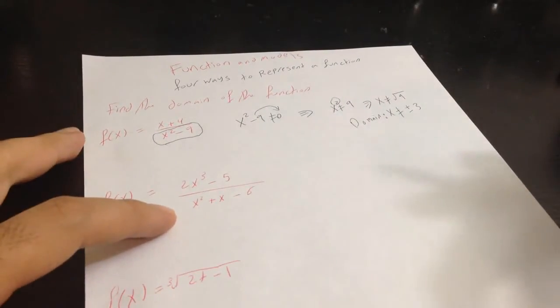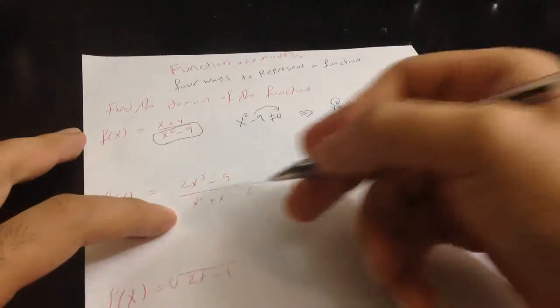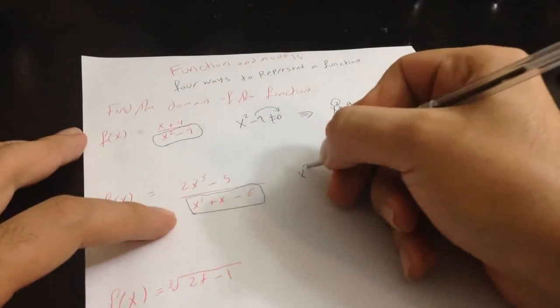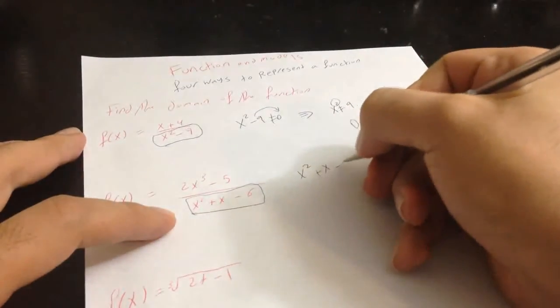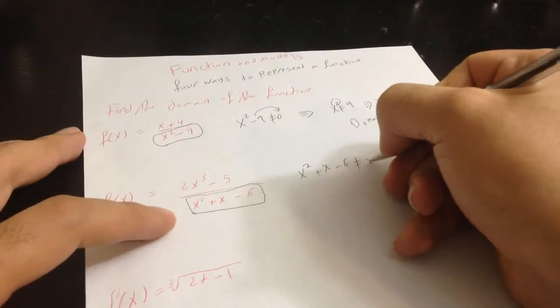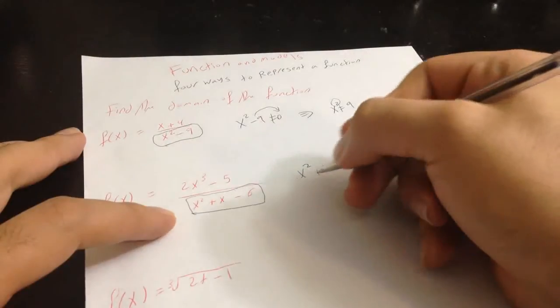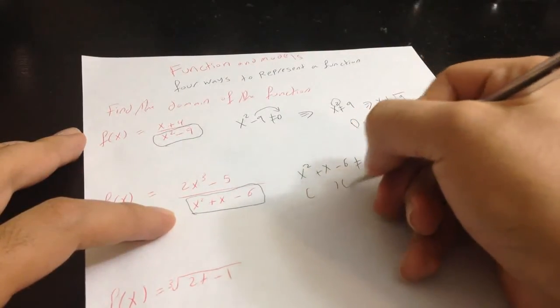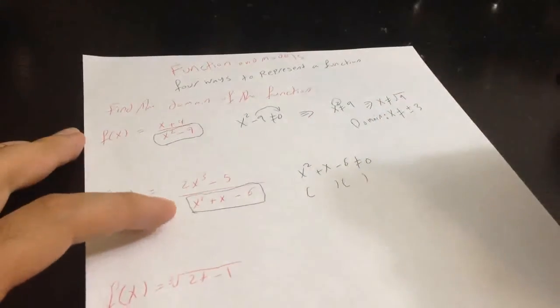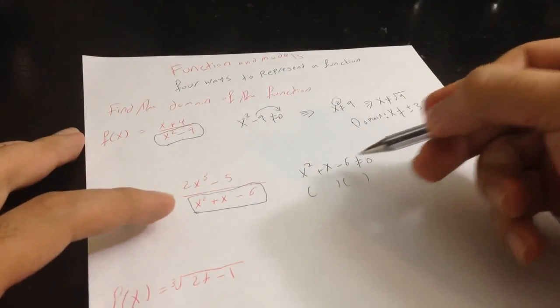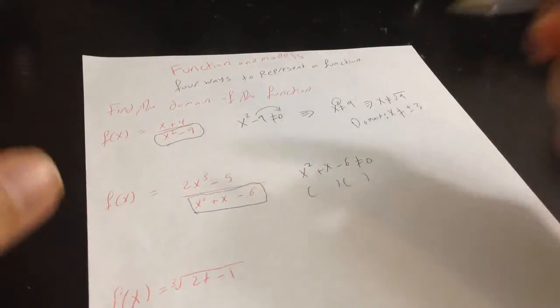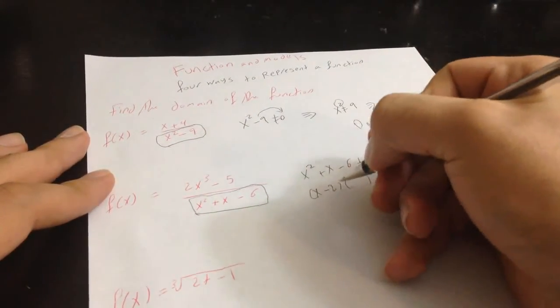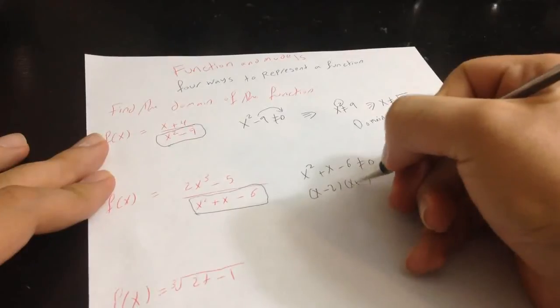to find the domain is also simple. We have to solve this equation, which is x square plus x minus 6 is not equal to 0. So to solve this part, we find the factors, which is to create two brackets which equals x minus 2 and x plus 3,